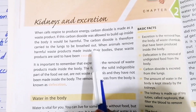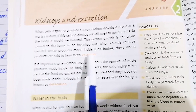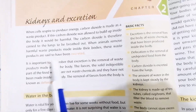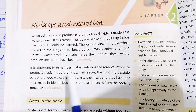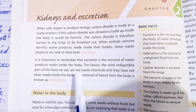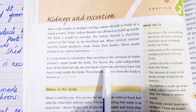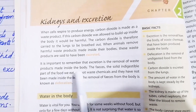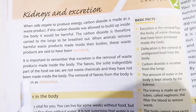Carbon dioxide goes outside the body. Animals remove the harmful waste products made inside their bodies, and these waste products are said to have been excreted. It is important to remember that excretion is the removal of the waste products made inside the bodies.